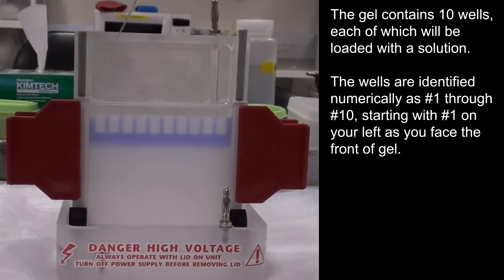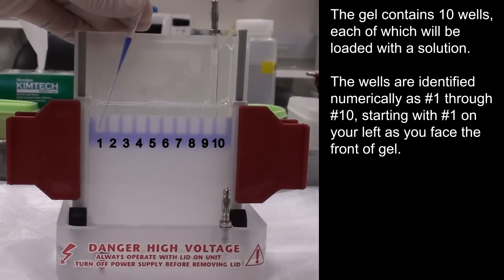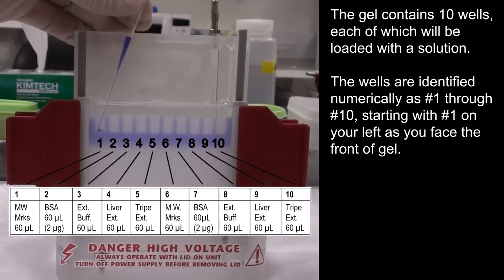The gel contains 10 wells, each of which will be loaded with a solution. The wells are identified numerically as number 1 through number 10, starting with number 1 on your left as you face the front of the gel.